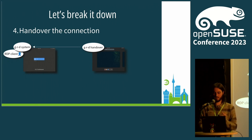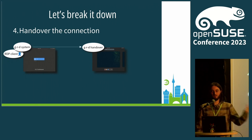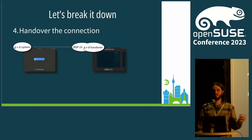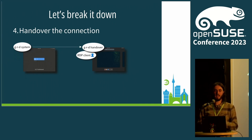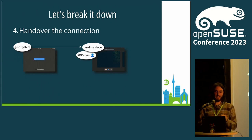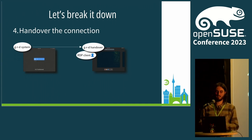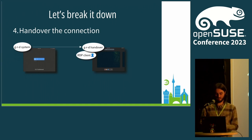Using the DBus interface, the system daemon will hand over the RDP client to the handover daemon, and then the RDP client will initialize the connection, authenticate, and the user will start using the user session. And all of this is happening headlessly.